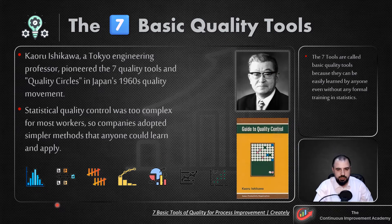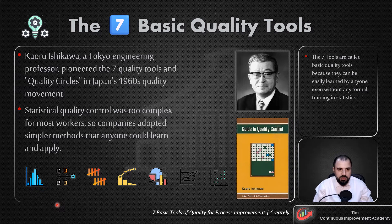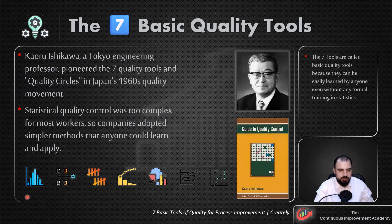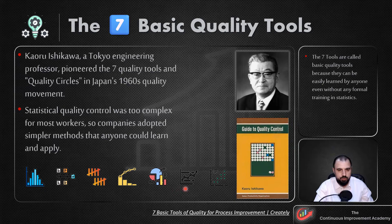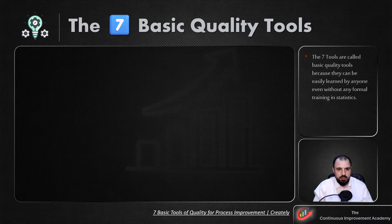We are going to cover the seven tools in this section, which is the key component of this course. For every tool, we are going to discover how we can make use of them in our improvement activities. We have the histogram, the fishbone diagram, check sheets, the Pareto diagram, charts, control charts, and the scatter diagram.